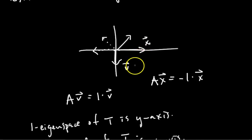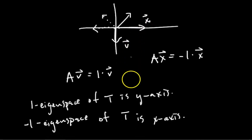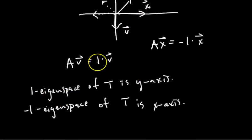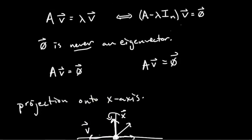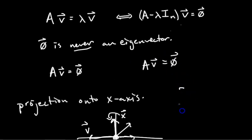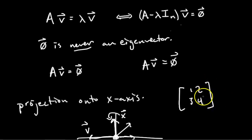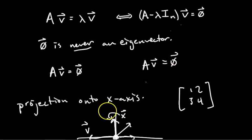Hopefully this helps you understand geometrically how to think about eigenvectors, eigenvalues, and eigenspaces. In the next video, we're going to learn how to compute eigenvectors and eigenvalues when you're just given a matrix like [1, 2; 3, 4]. We'll use the characteristic equation to do that.